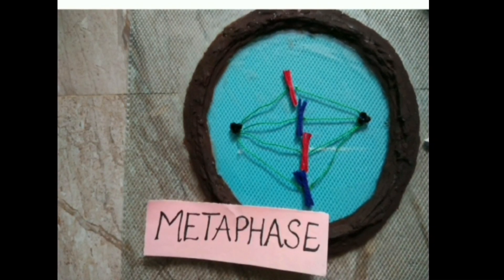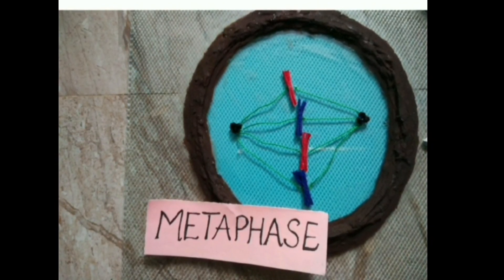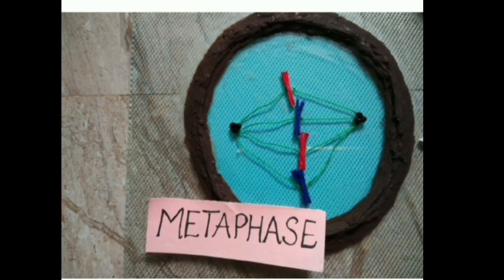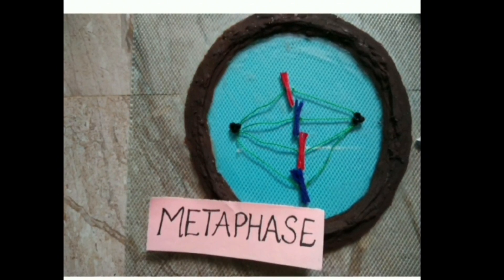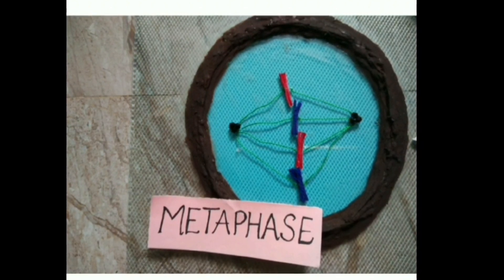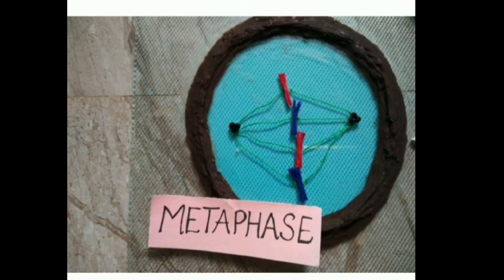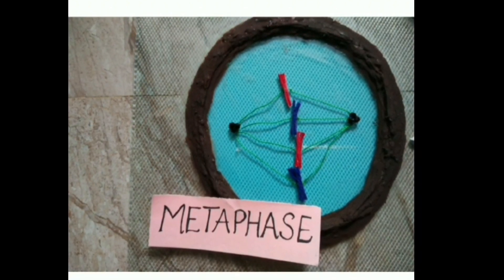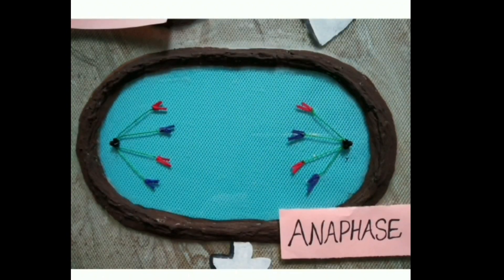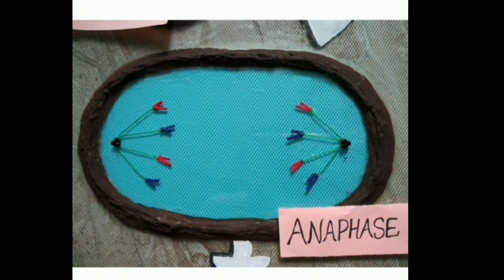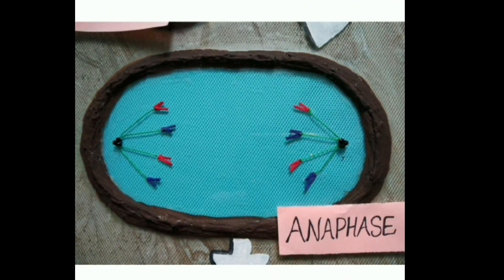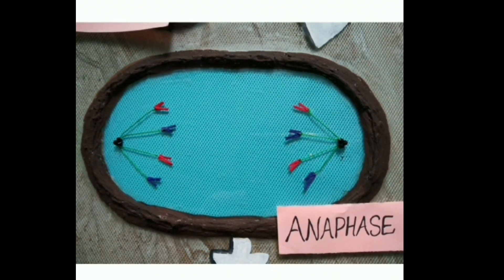In metaphase, spindle fibers attach to the kinetochore of chromosomes. Chromosomes are moved to the spindle equator and get aligned along the metaphase plate through spindle fibers to both poles. Next is anaphase, where the centromere splits and the chromatids separate and move to opposite poles.